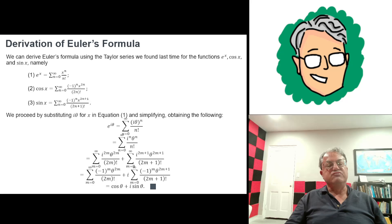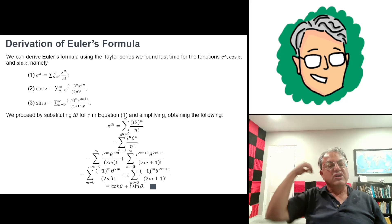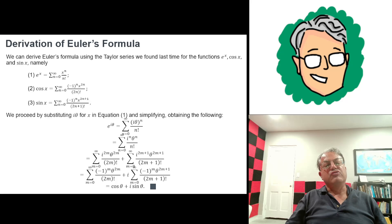Let's see how that works. We just substitute iθ for x. If we do that, we get the sum as n goes from 0 to infinity times iθ to the nth power. We're just substituting iθ for x over n factorial. We can rewrite iθ to the nth power as i to the n times θ to the n all over n factorial.